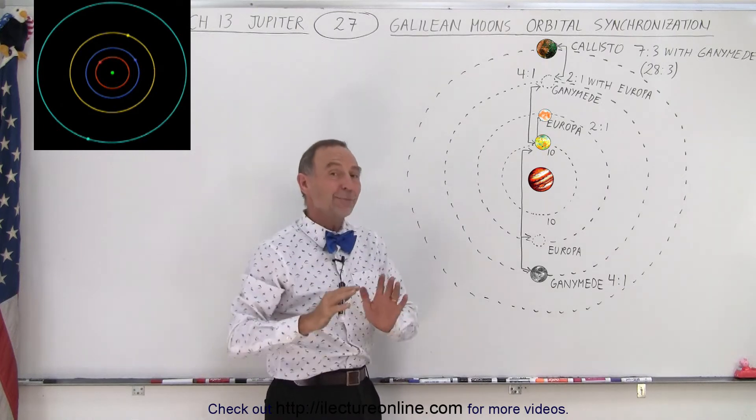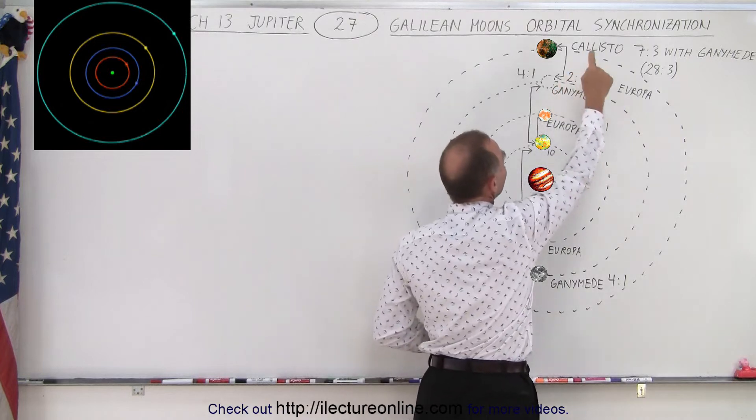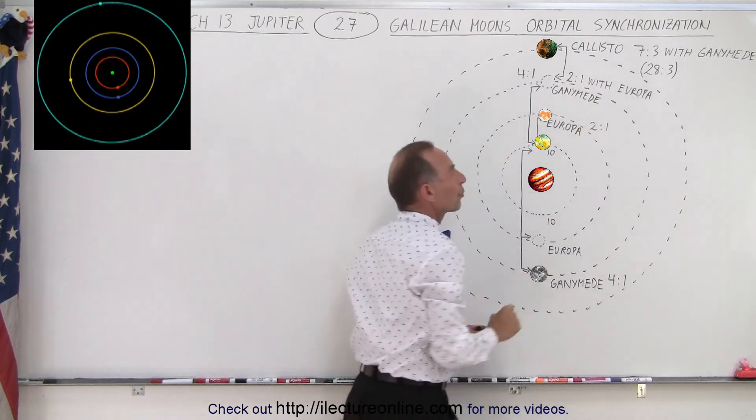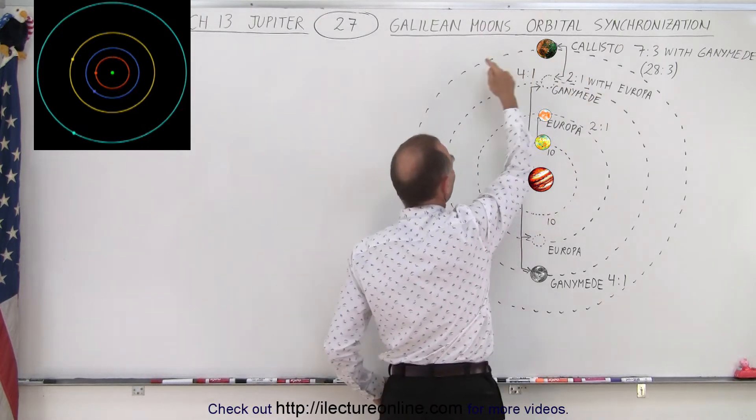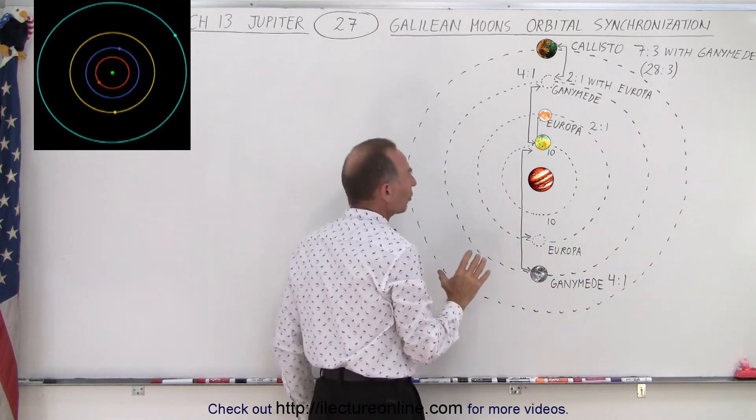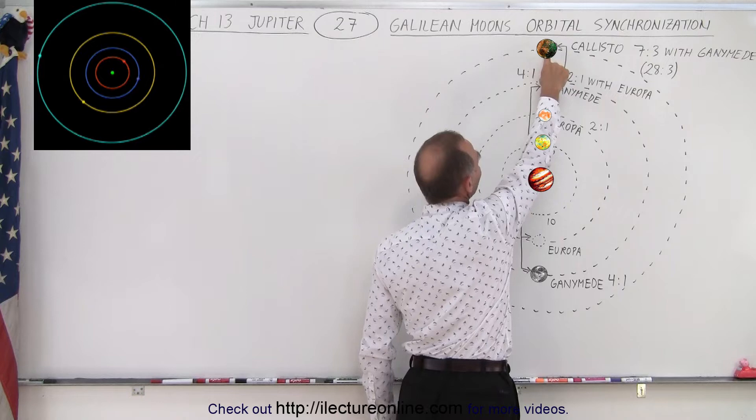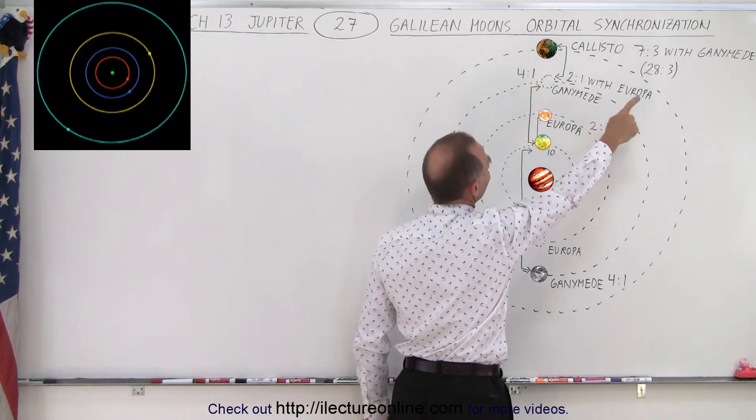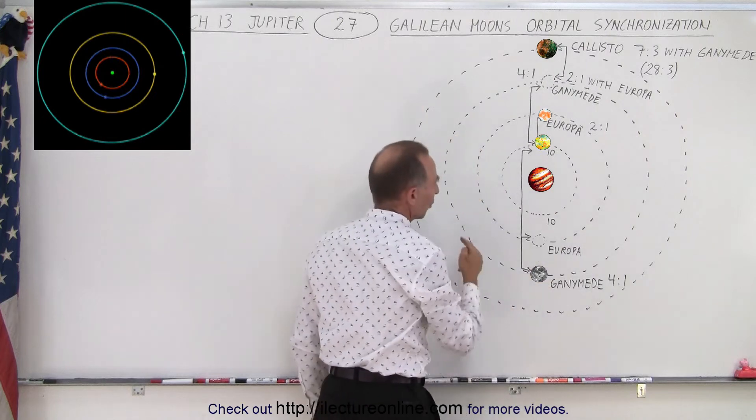And then to make it even more complicated, now we have Callisto and Ganymede have a seven to three orbital relationship. In other words, for every seven trips of Callisto, Ganymede will make three trips. So there's only an occasion where Callisto and Ganymede will be on the same side, and that will happen after three Callisto orbits and seven Ganymede orbits.